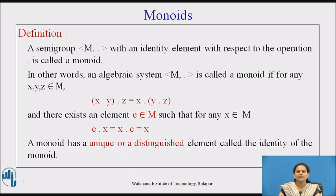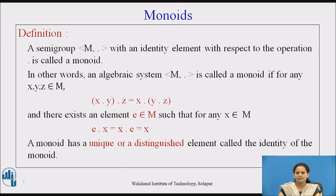In other words, an algebraic system (M, dot) is called a monoid if for any X, Y, Z which belongs to M, (X dot Y) dot Z is equal to X dot (Y dot Z) — the property of associativity — and there exists an element E belonging to M such that for any X belonging to M, E dot X equals X dot E equals X. So X is any element and E is the identity element for the monoid. A monoid has a unique or distinguished element called the identity of the monoid.